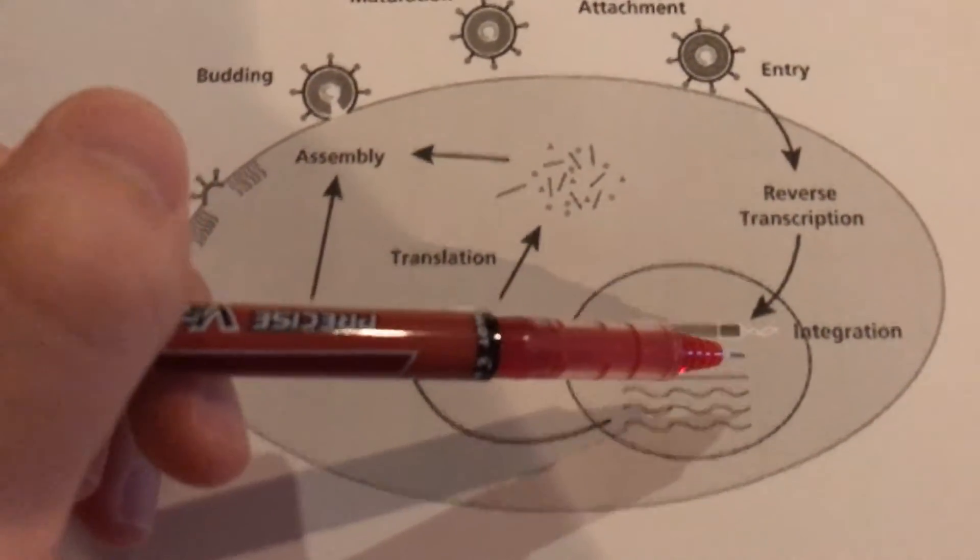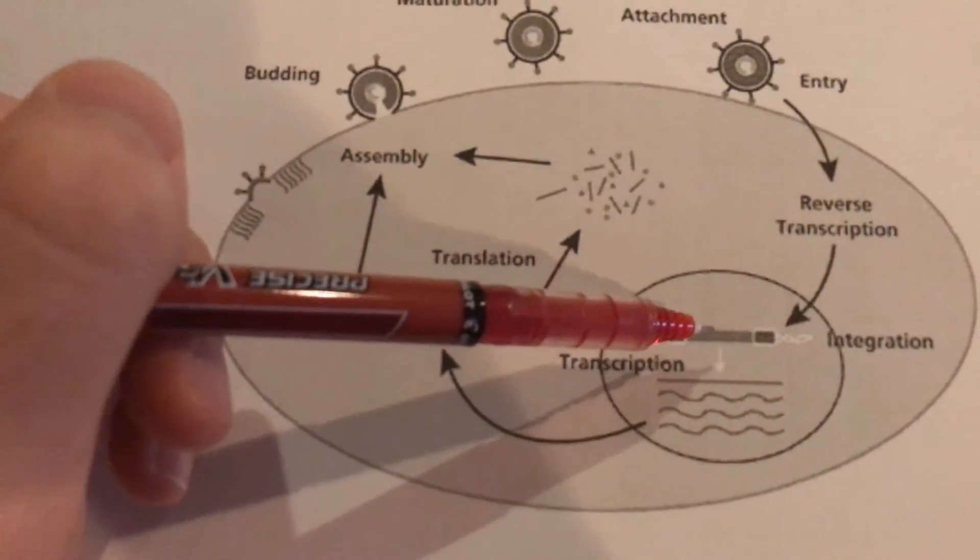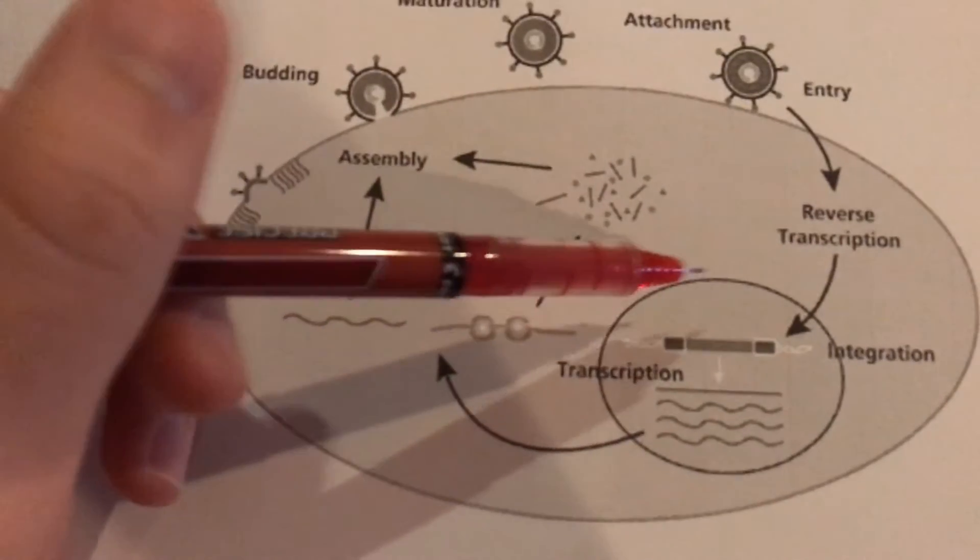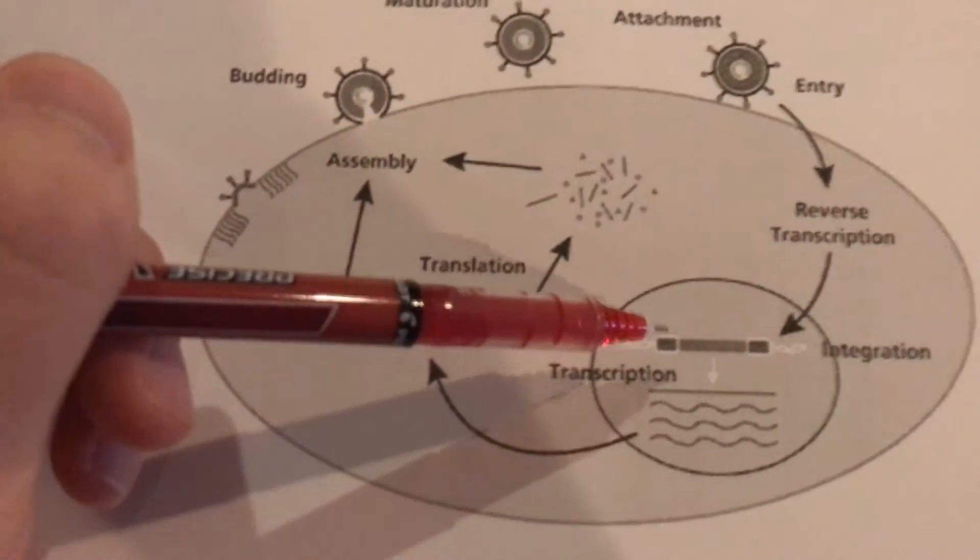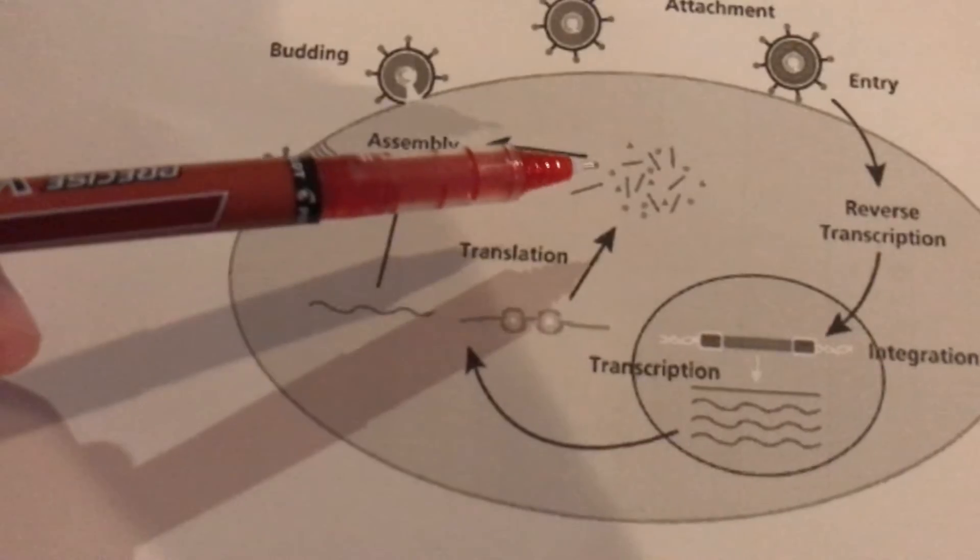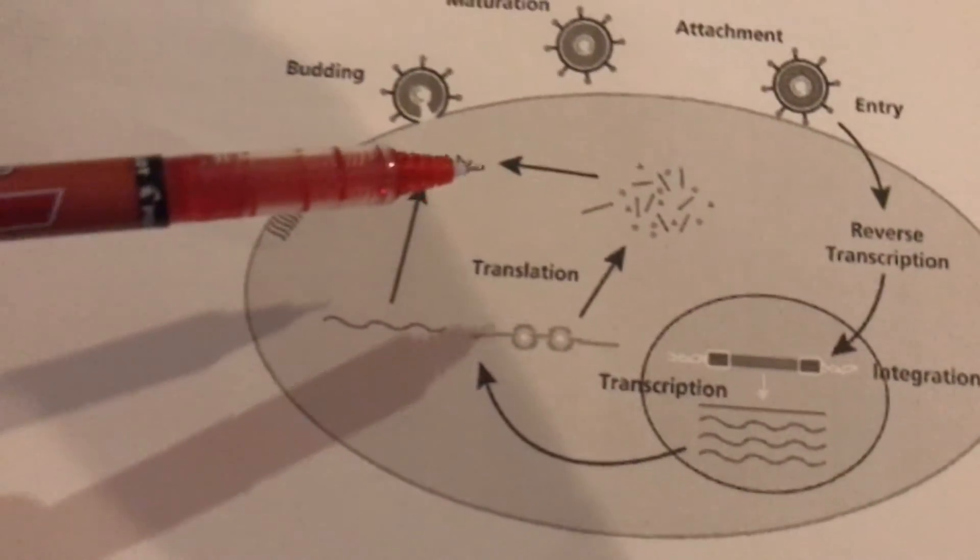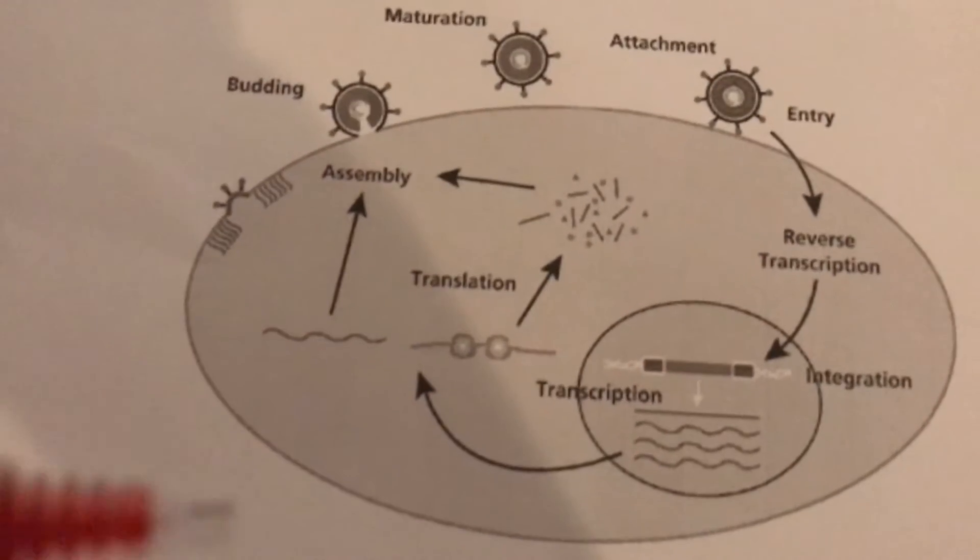When the host's DNA undergoes transcription and translation to make proteins, so does the retrovirus DNA. This is how it produces more retroviruses to become